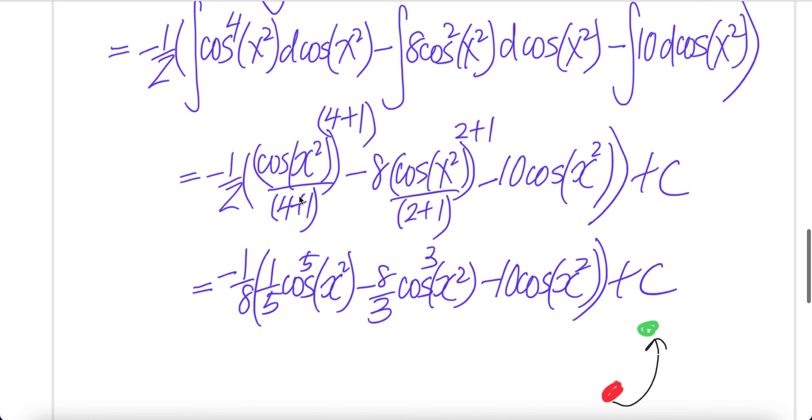4 plus 1 is 5 upstairs, 5 downstairs. Here, 2 plus 1 is 3 upstairs, 3 downstairs. Here, and then everything is the same. Done.